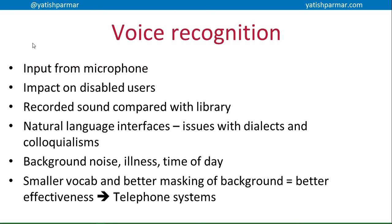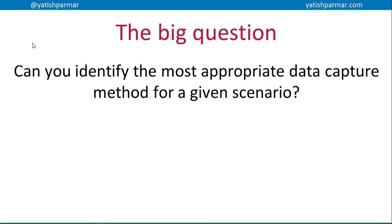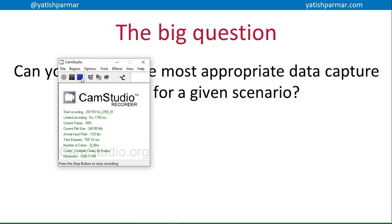For example, if you phone the Vue cinema to make a booking for a film, it just asks you to talk to it — similarly Virgin Trains when booking a train. Basically, you need to be able to think about the most appropriate data capture method for a given scenario and how it would be used to capture data to go into your system. That was a quick run through a whole bunch of different methods — the one I didn't cover is QR codes, so look that one up yourself.